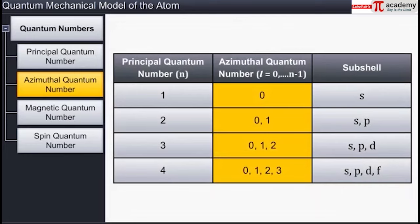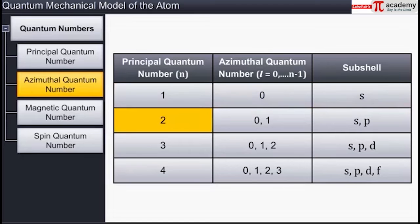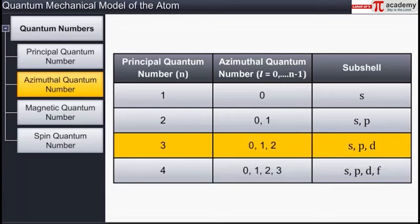The value of l in turn defines the number of subshells: when n is equal to 1, l is equal to 0, meaning there is only one subshell in the first main energy level. For n equal to 2, l is equal to 0 and 1, meaning there are two subshells in the second main energy level. For n equal to 3, l is equal to 0, 1, and 2, meaning there are three subshells in the third main energy level.